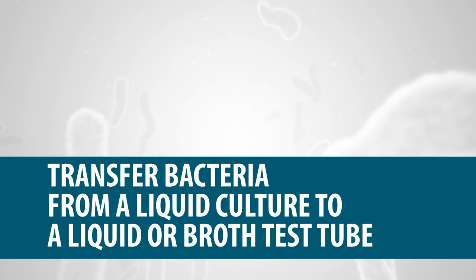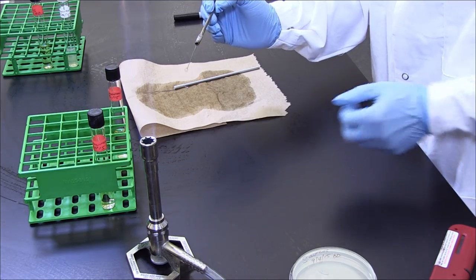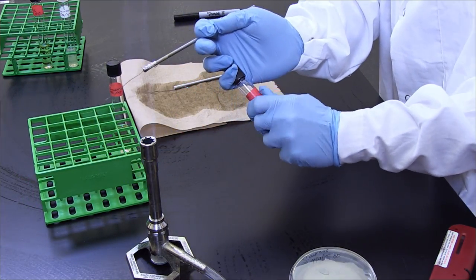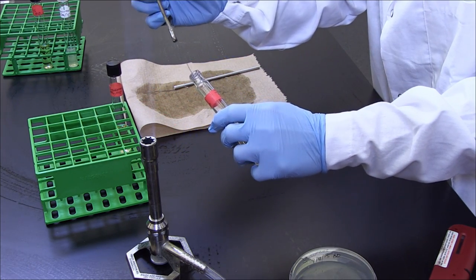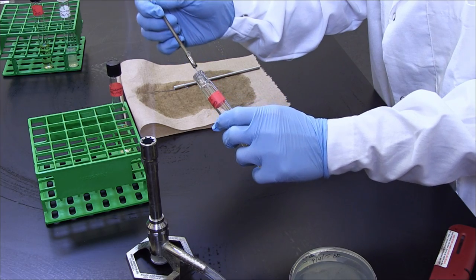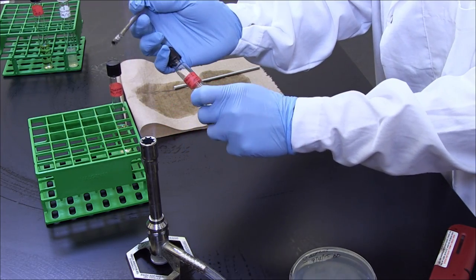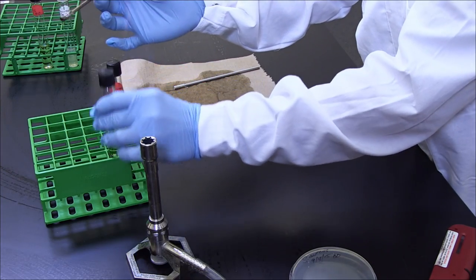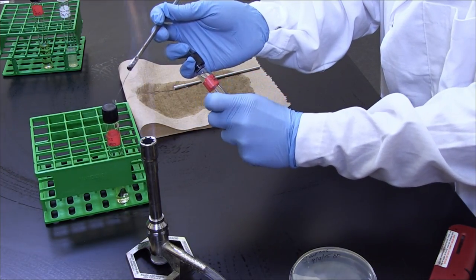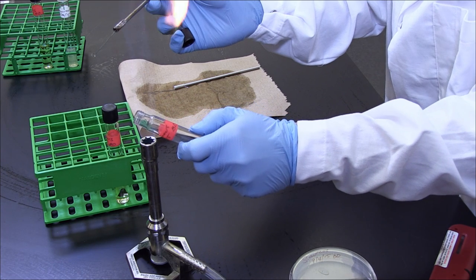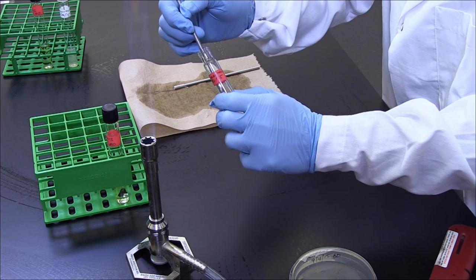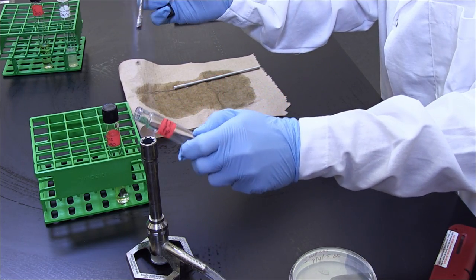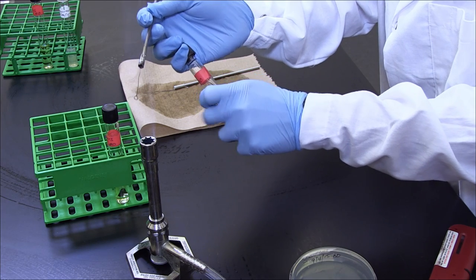Transfer Bacteria from a Liquid Culture to a Liquid or Broth Test Tube. Sterilize the inoculating tool, take the cap off the test tube of liquid culture, and pass its mouth through the flame several times. The inoculating tool is then dipped into the liquid culture and removed. Sterilize the mouth before replacing the cap. Pick up a test tube with liquid medium with your free hand and remove the lid with your dominant hand. Pass the mouth of the test tube through the flame several times to sterilize. The inoculating tool with bacteria is then dipped into the liquid. Sterilize the mouth of the test tube again before replacing the cap.